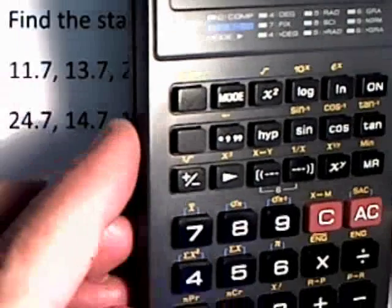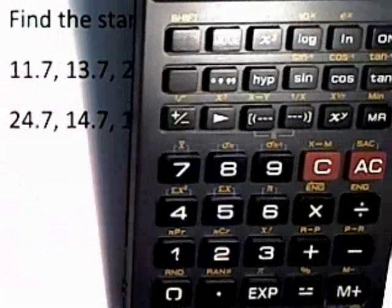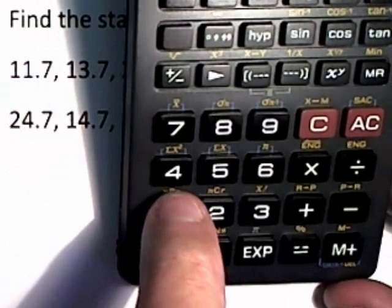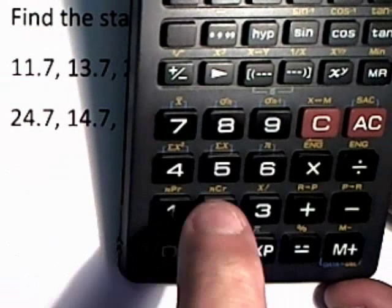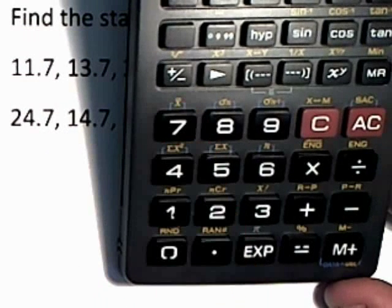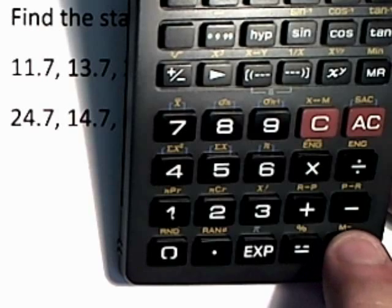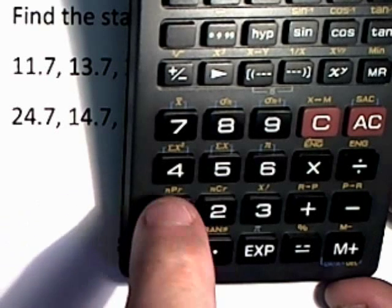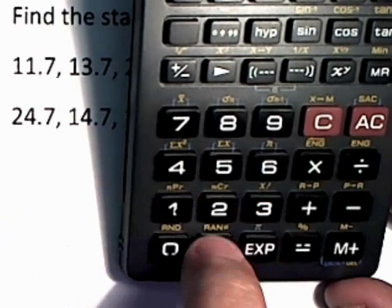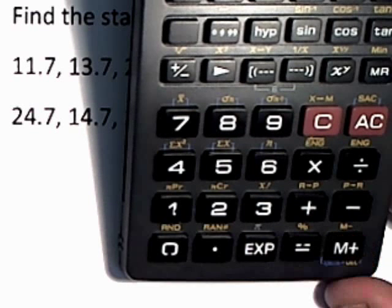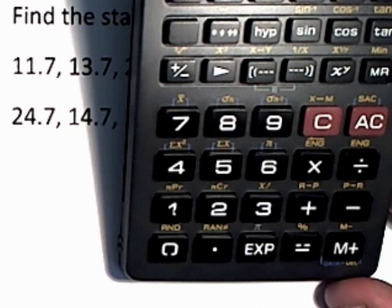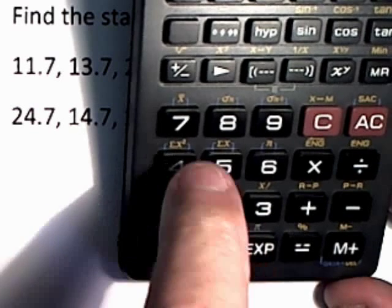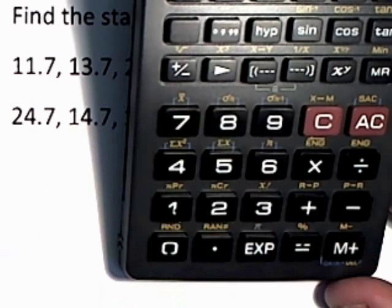Now once you're in the stats mode, you're ready to enter these numbers. So you start off with 11.7 and you enter by pressing the M plus key. So 11.7 is now in. Then you go to 13.7, press M plus. Then you go to 24.7, M plus.